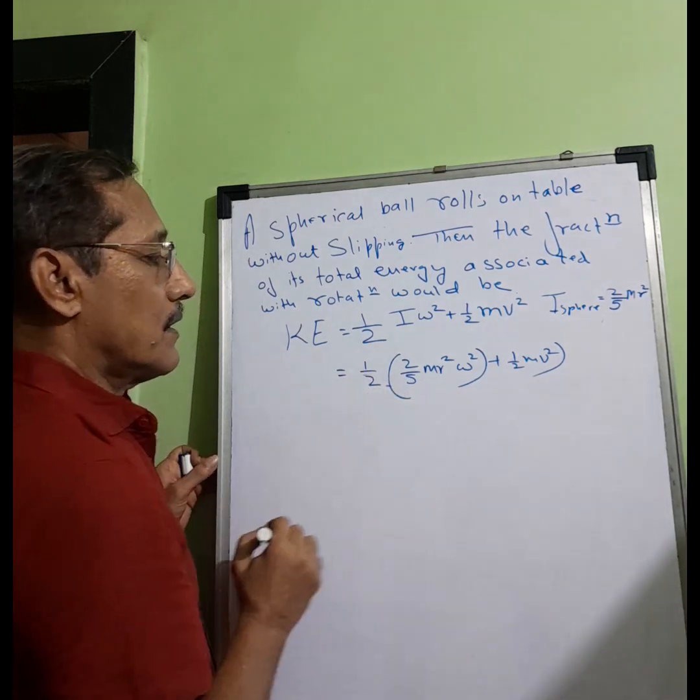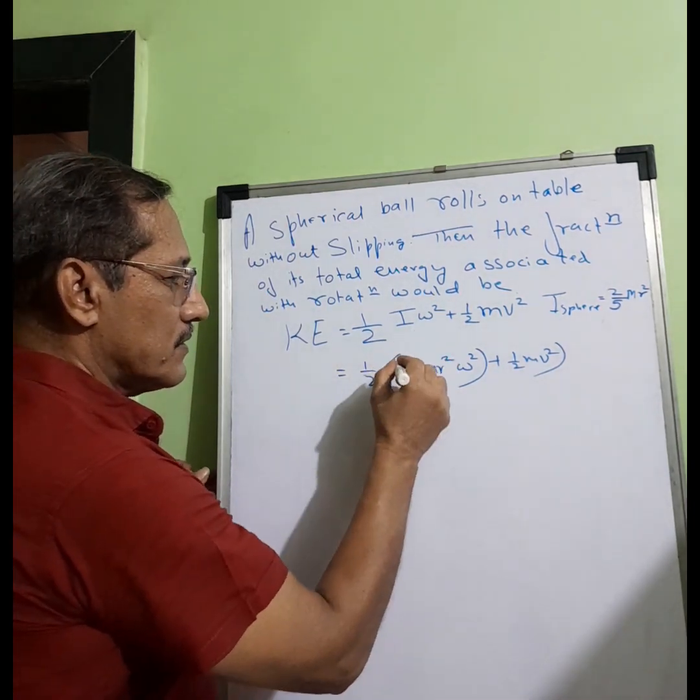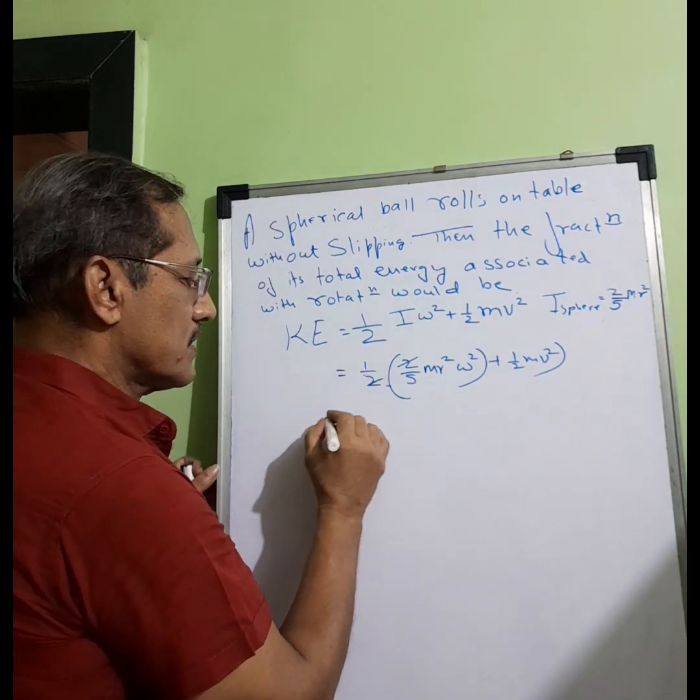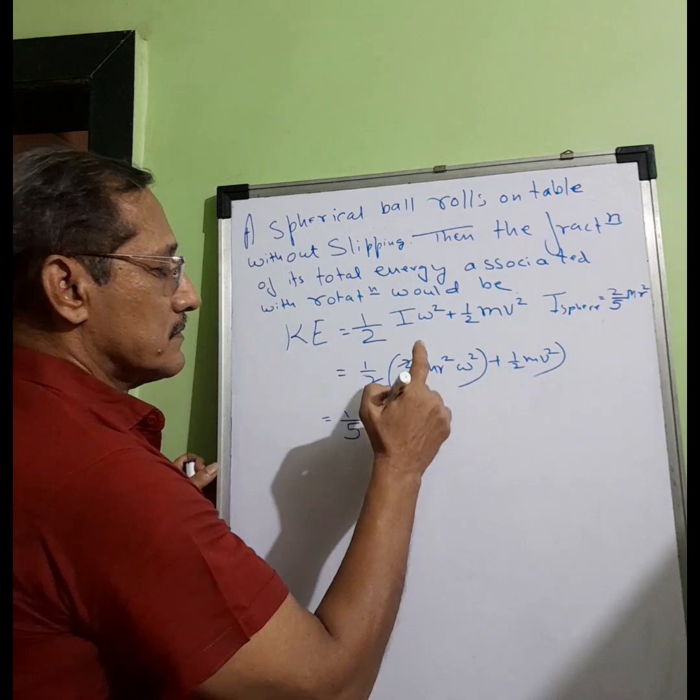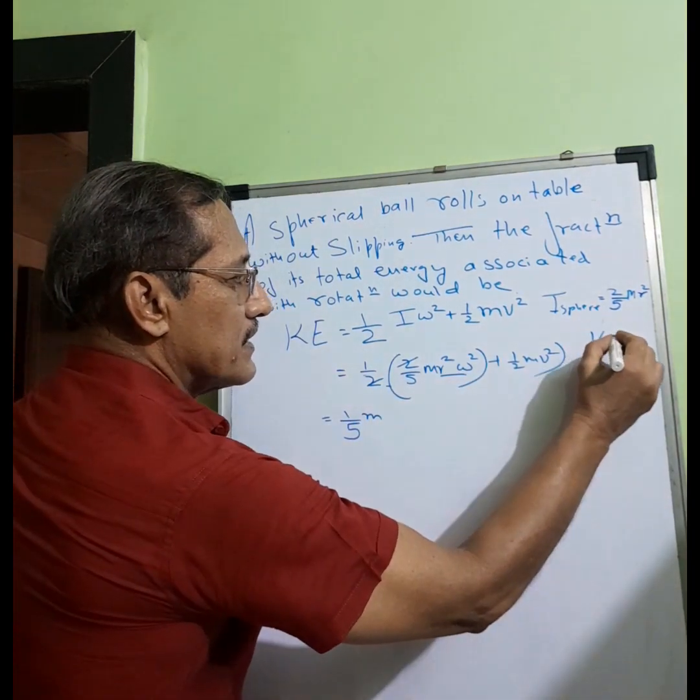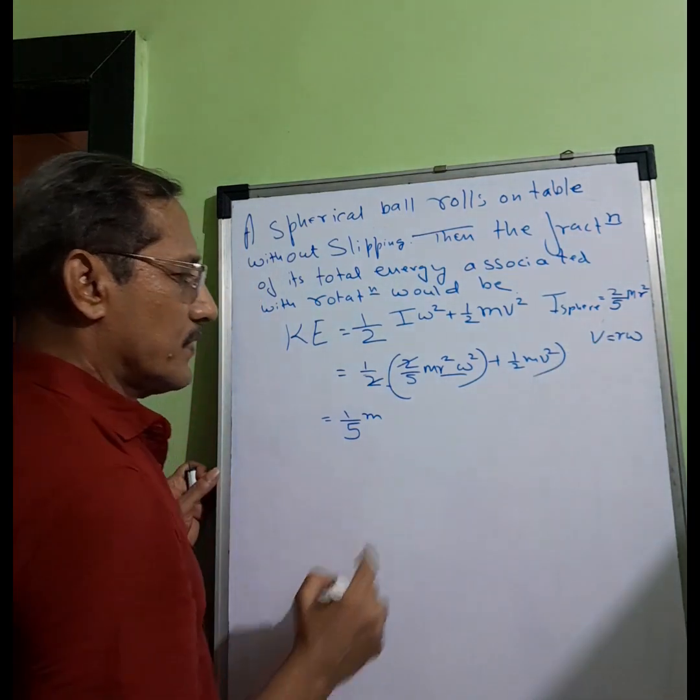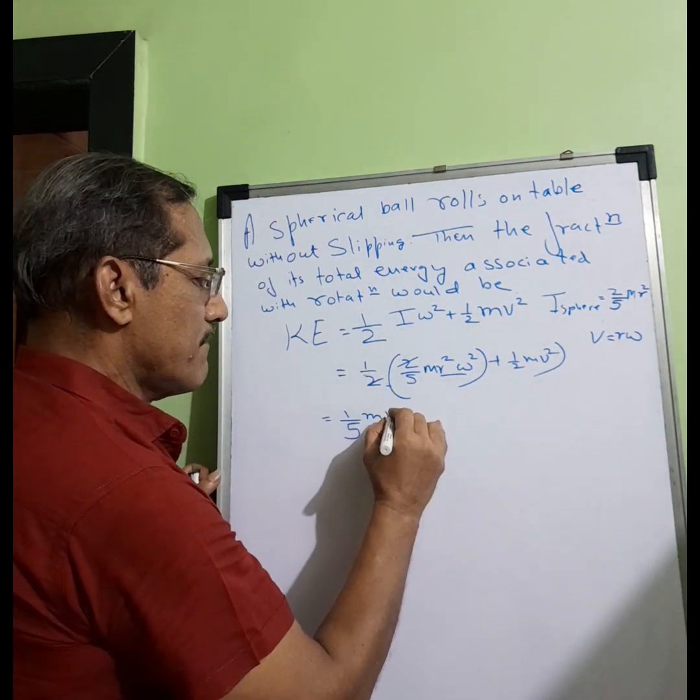So if I take this out, cancel it, it becomes 1/5 m. We know v equals r omega, right? So this could also be v, so we can write it as mv².